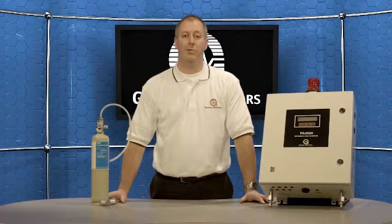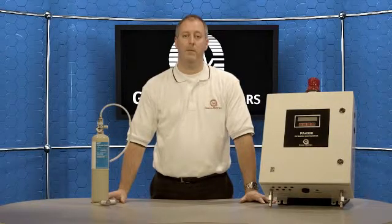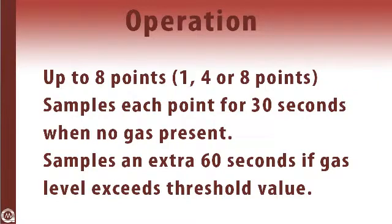So how does the sample get into the measuring cell? An internal pump and a set of valves pull a sample from up to 8 points that can be as far as 500 feet away from the monitor. The unit samples each point for 30 seconds when no target gas is present.